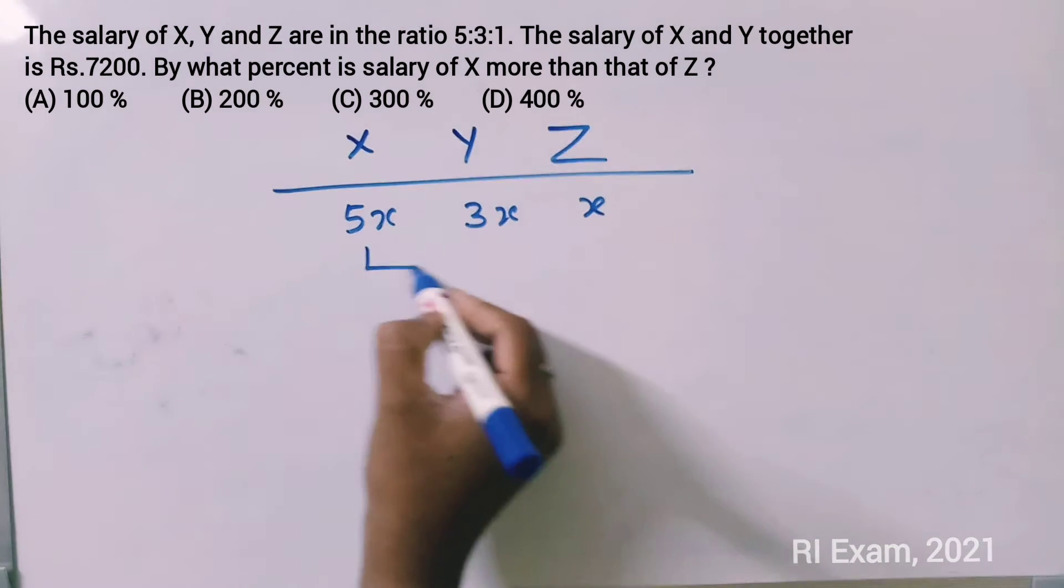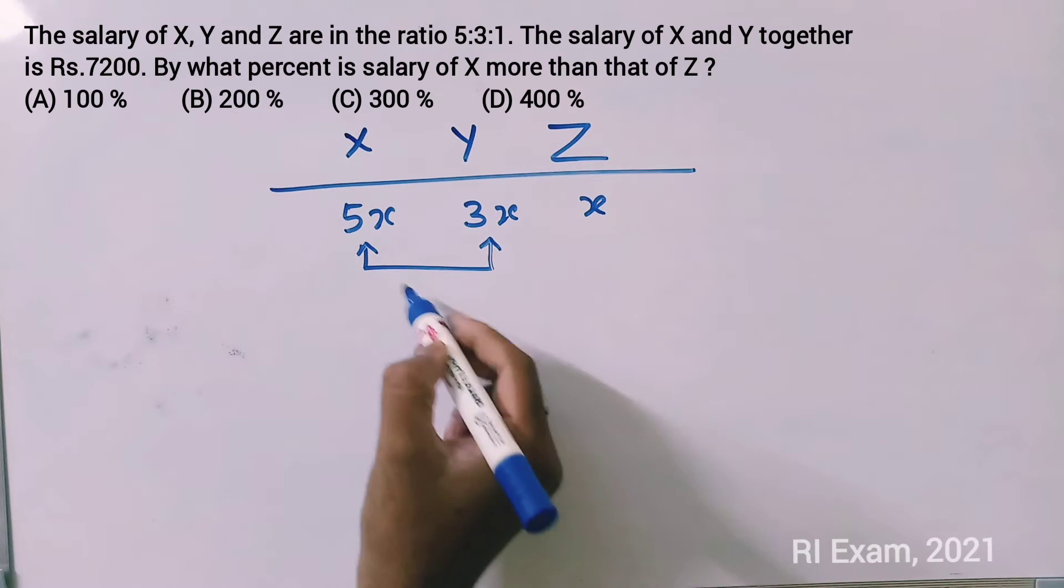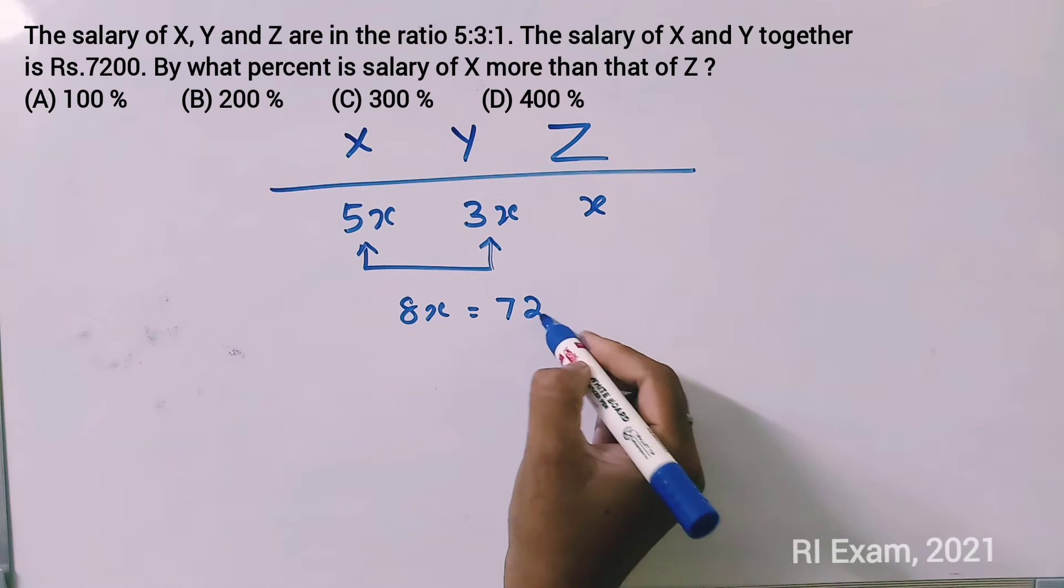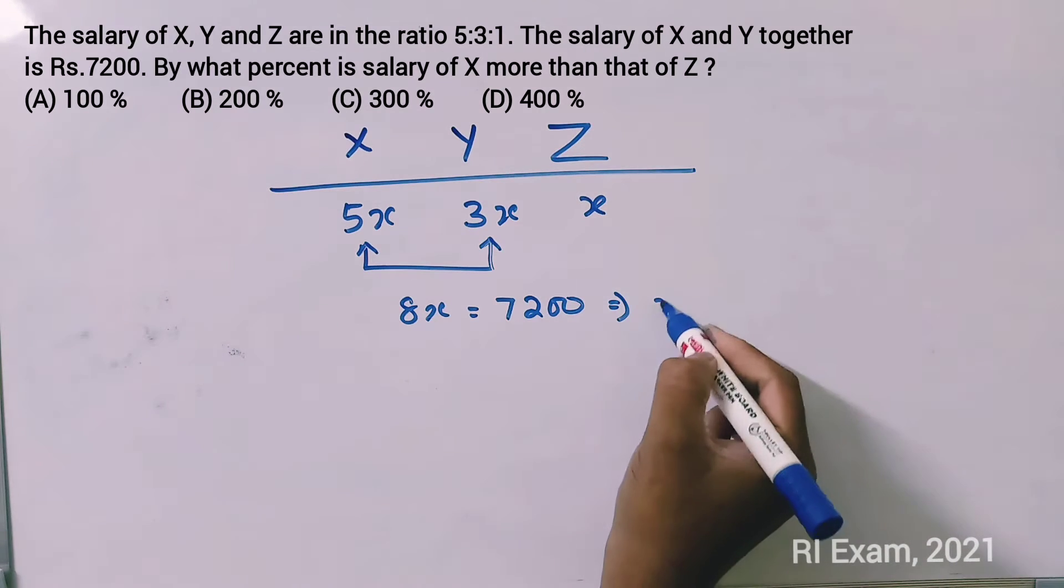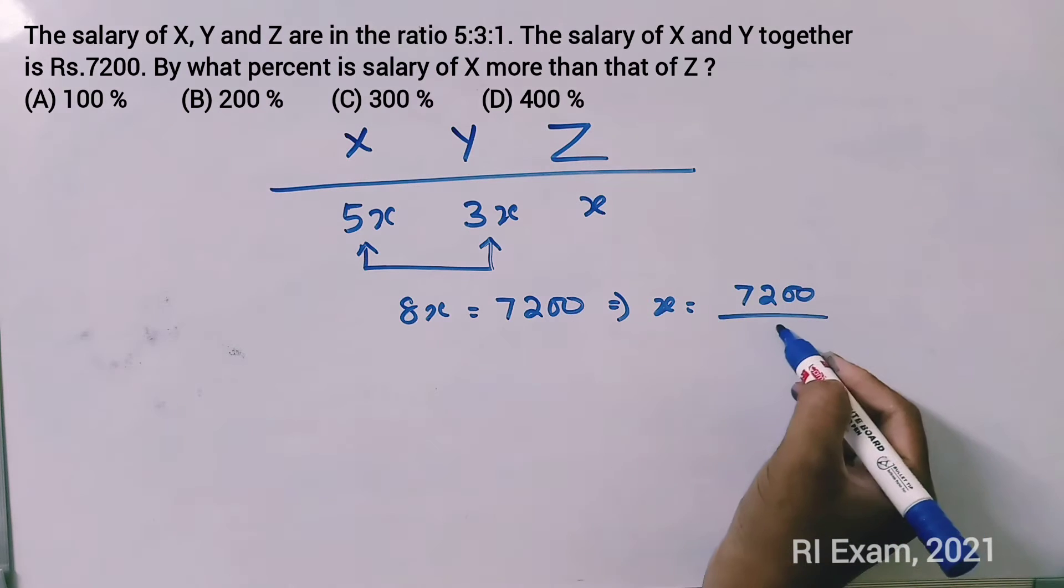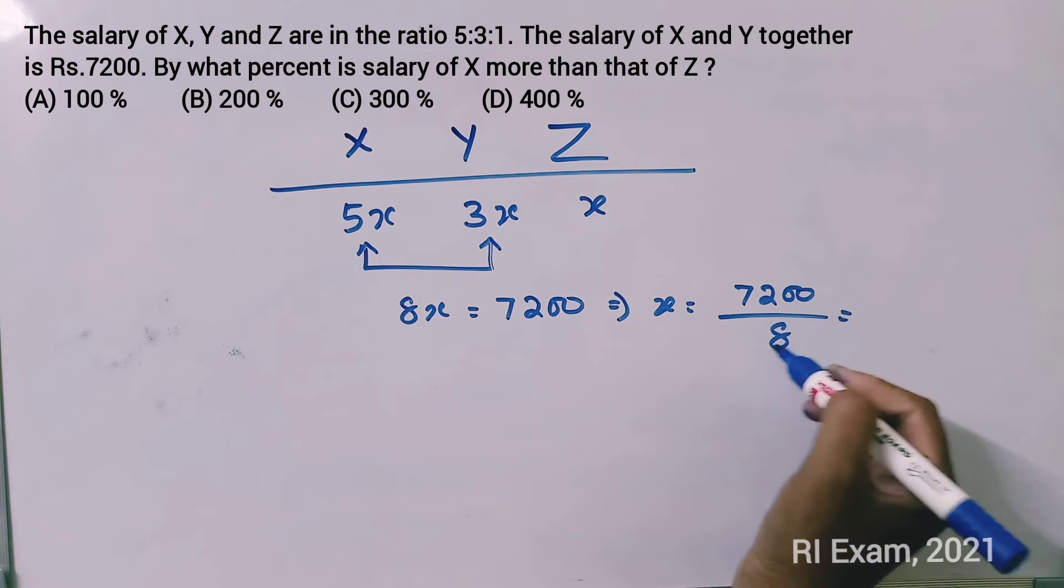Then, the salary of X and Y together is Rs.7200. Means 8x is equal to 7200. Then x is equal to 7200 by 8, equal to 900.